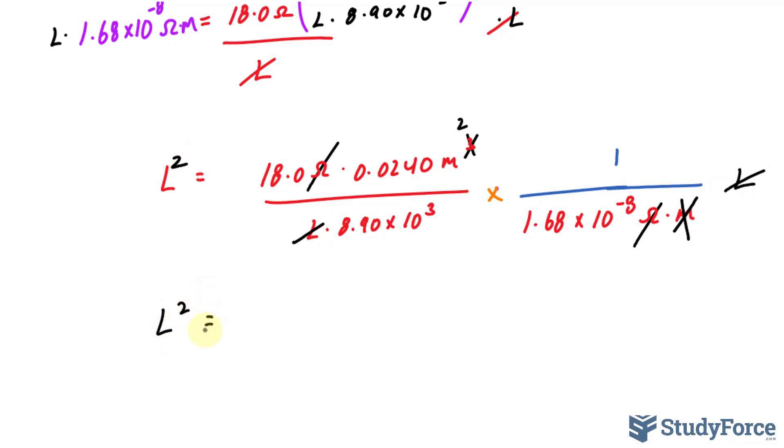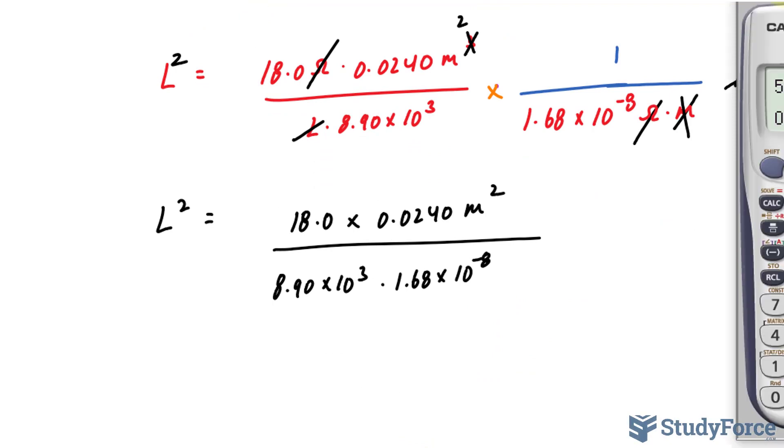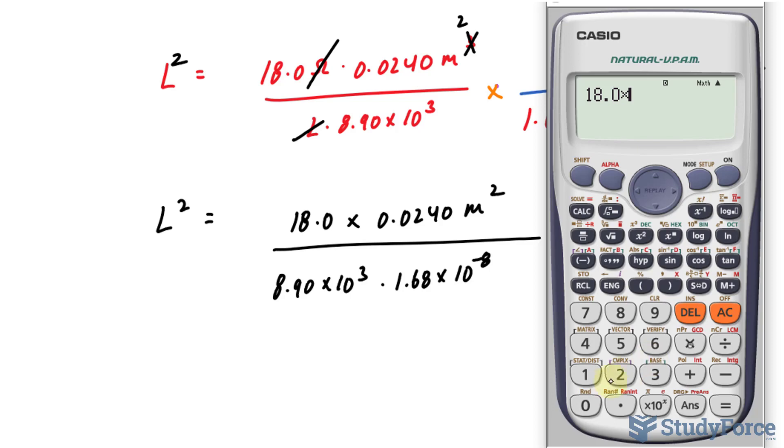So I have L squared is equal to 18.0 times 0.0240 meters squared over 8.90 times 10 to the power of 3. That's unitless. That's unitless. Times 1.68 times 10 to the power of negative 8. And that's also unitless. We can now go ahead and find out what that value is using our calculator. 18.0 times 0.0240. That's the top part. Divided by 8.90 times 10 to the power of 3 times 1.68 times 10 to the power of negative 8.